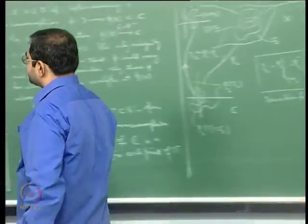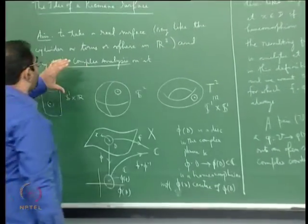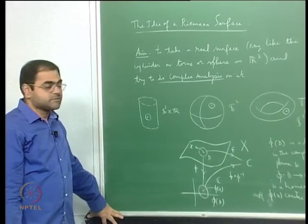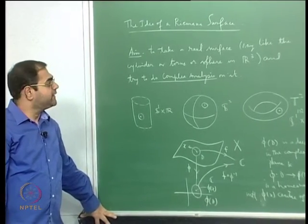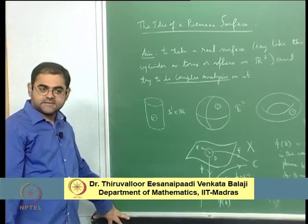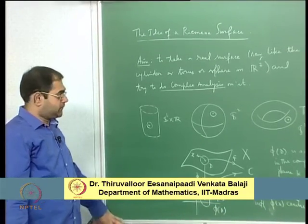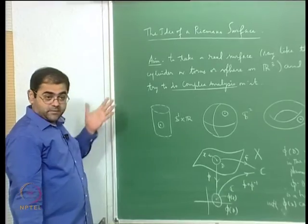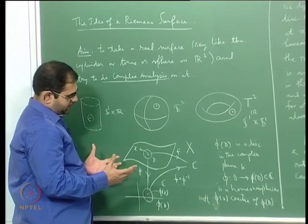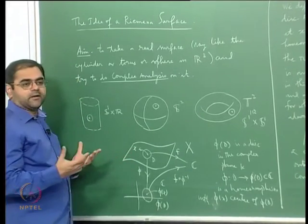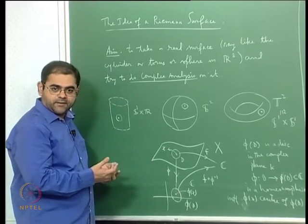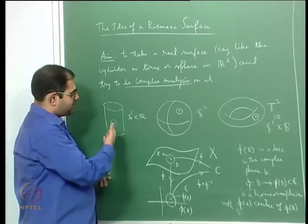This is a continuation of the previous lecture. My aim is to explain why the implicit function theorem is important — namely that it helps you think of the zero locus of a function of two complex variables as a Riemann surface. What I told in the last lecture was the idea of a Riemann surface: it is a structure that allows you to do complex analysis on a surface, a surface you can imagine in 3-space like the cylinder, the sphere, or the torus.